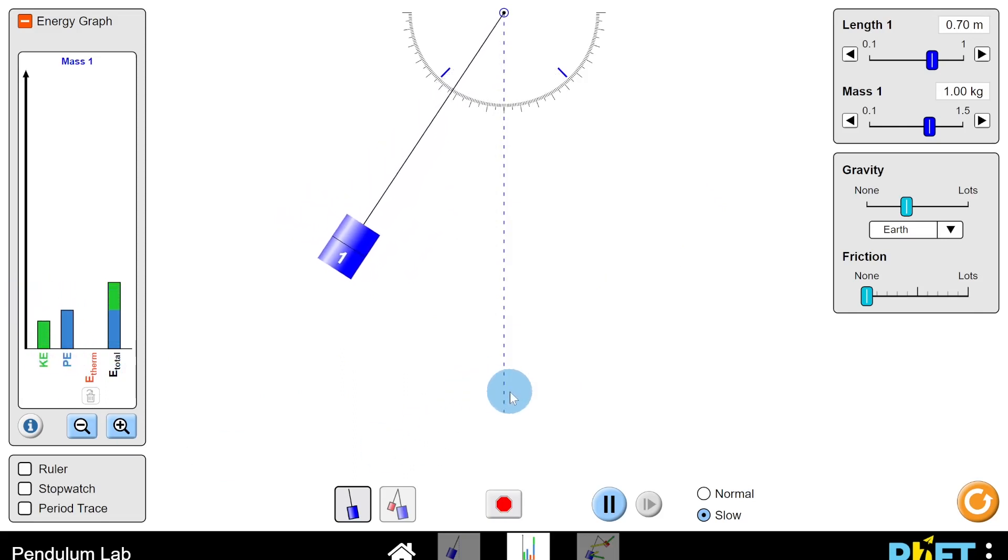And then at the extremities of the swing, i.e. at either ends of the motion, we should see maximum potential energy and zero kinetic energy because all of the kinetic energy has gone into potential energy at the end of the swing. So you'll see that there with the blue bar getting zero at the equilibrium and then maximum at the end of the swing.